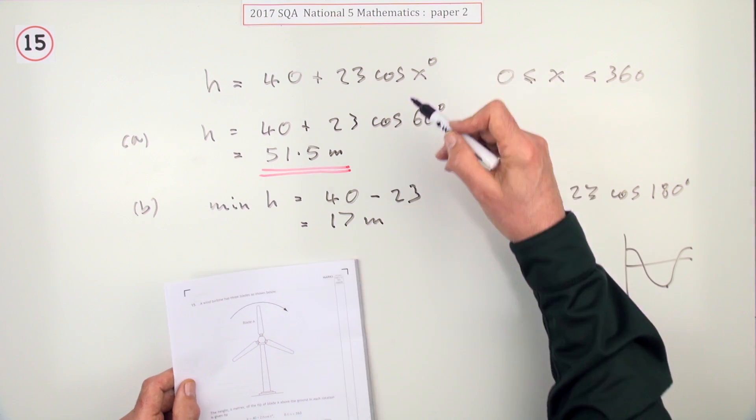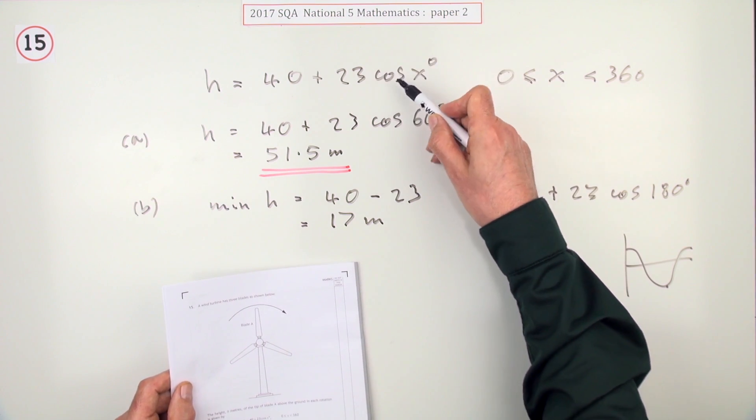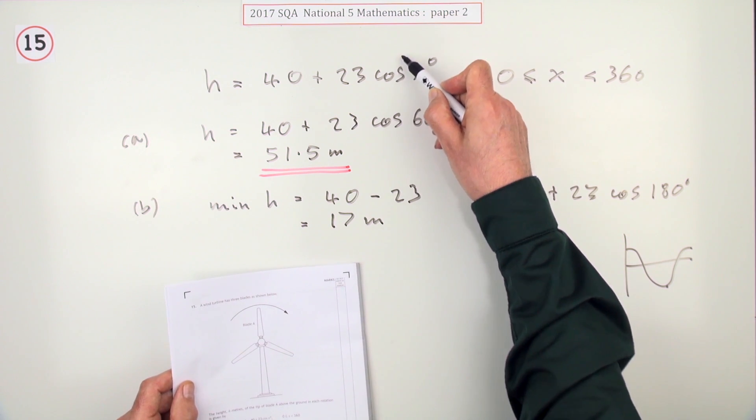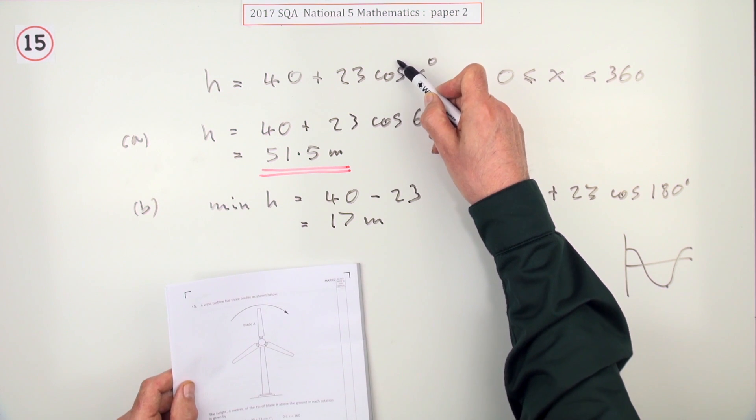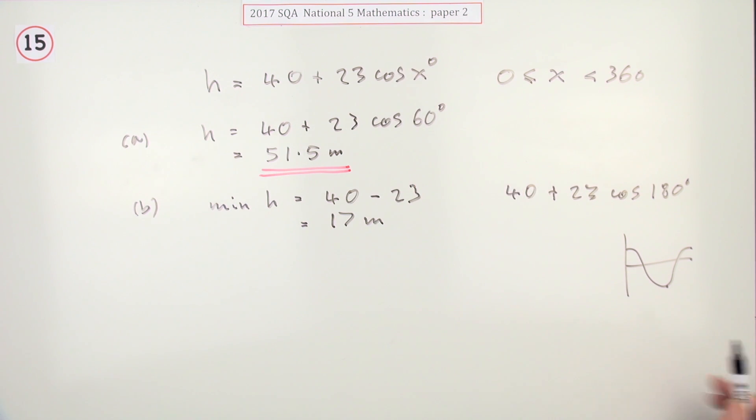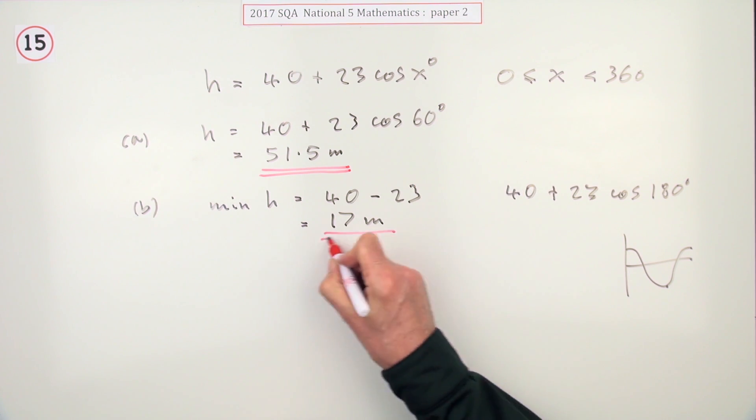Or you might just think the cosine can only vary between one and negative one. So when it's at its biggest, one, you'll be adding 23. And when it's at its lowest, minus one, you'll be subtracting 23. Any of the ways you'll get 17.